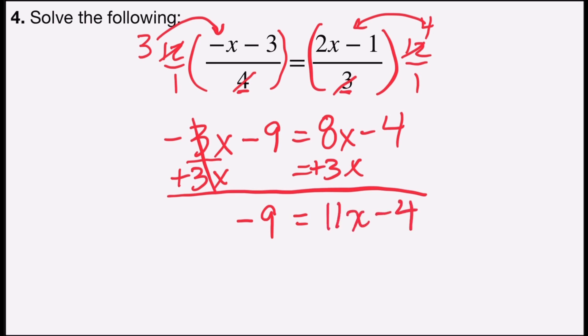And now I have a two-step. Just add 4 to both sides. Negative 9 plus 4 is negative 5. Negative 4 plus 4 is 0. 0 plus 11x is 11x. And the last step would be to divide both sides by 11.